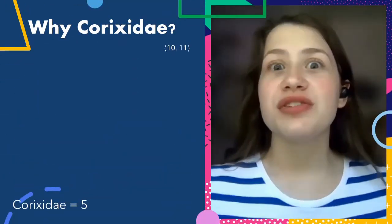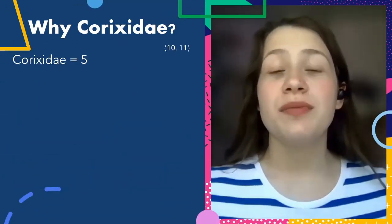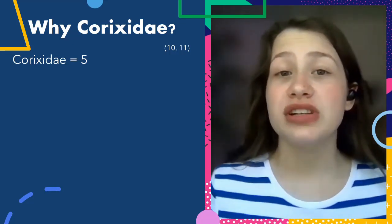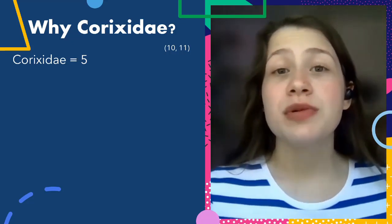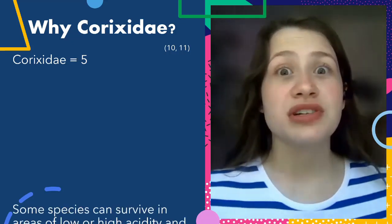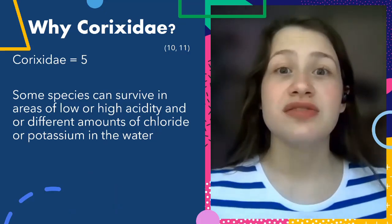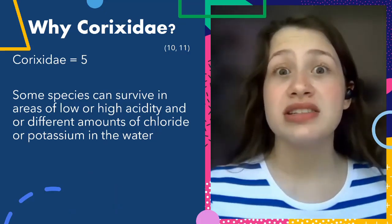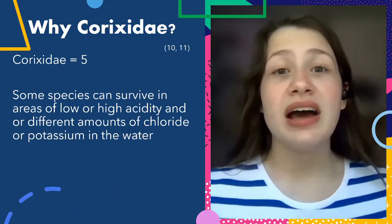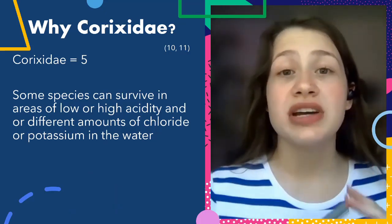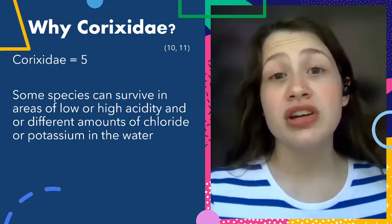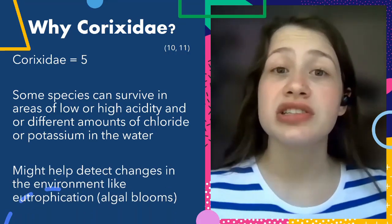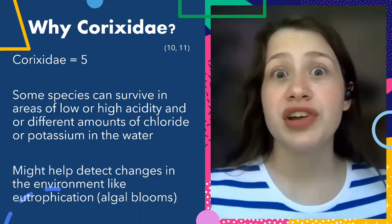We know that Corixidae score a BMWP score of 5, so why choose them for this study? Well, it's been proposed that some Corixidae species can survive in higher or lower acidity, and/or varying amounts of chloride and potassium in the water, so this might be useful for detecting changes in the environment like eutrophication.